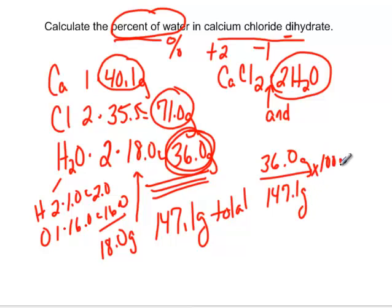Times 100 because we want a percent. And when you do this math out, you end up with about 24.5 percent water. So just about a quarter of this compound is water.